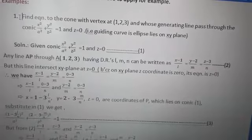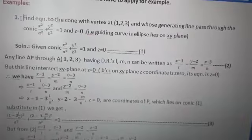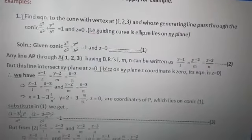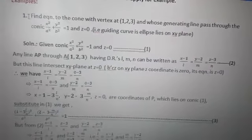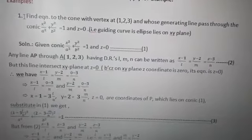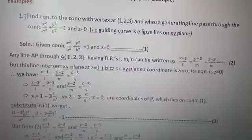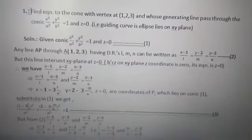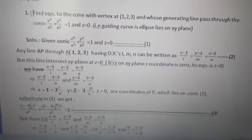All the examples on the cone with the given vertex — we are having two types of examples. The first type: vertex will be given and guiding curve will be given, and you have to find the equation of the cone.